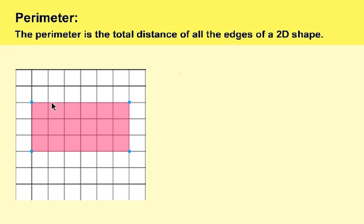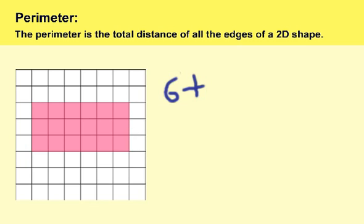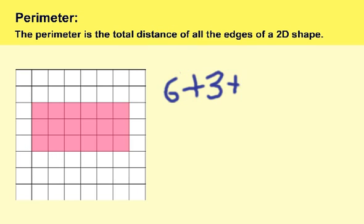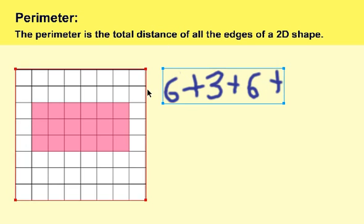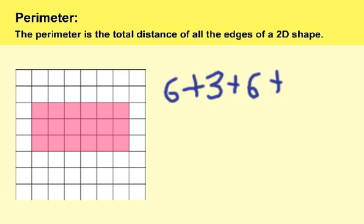So now we can start counting. Along the top: one, two, three, four, five, six. We've got six units. Now this side: one, two, three — we have three. Now let's count the bottom: one, two, three, four, five, six — we got six. And now we count this side: one, two, three — plus three.